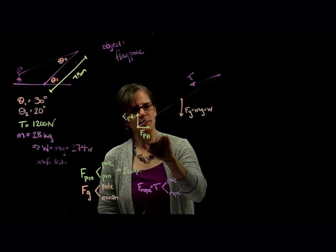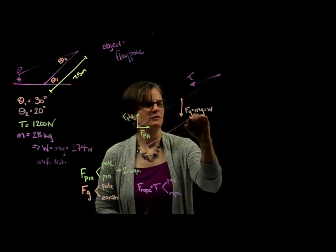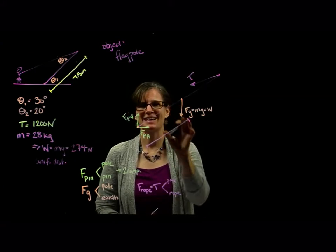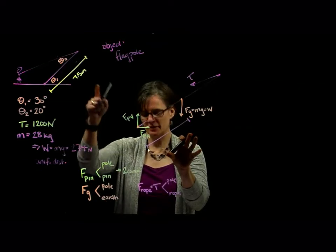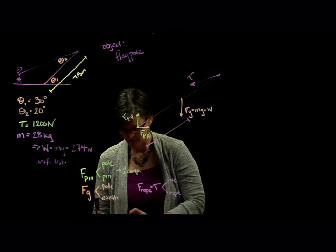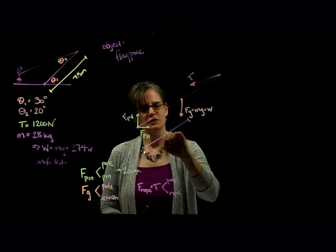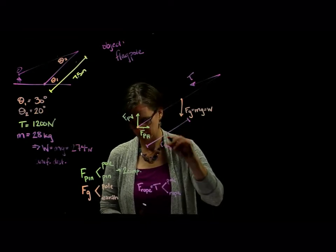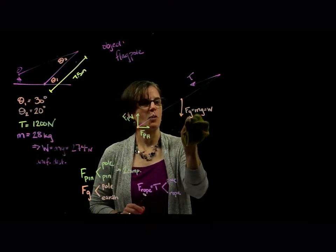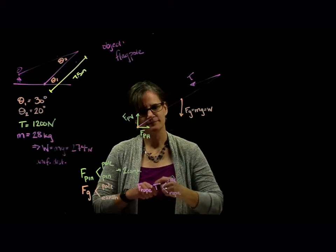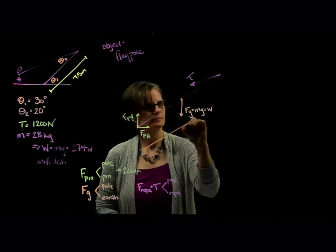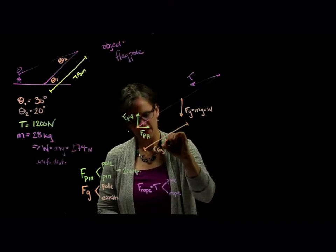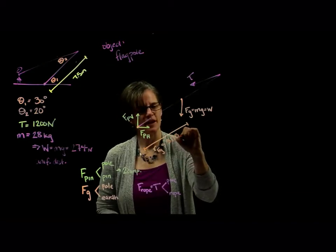So we first have the radii for the weight. Well, it's a uniformly distributed object. It's acting at the geometric center. The geometric center is half of 7.5. So this radius, let's put it in orange, since I used orange for the force.